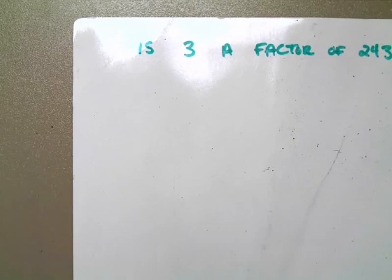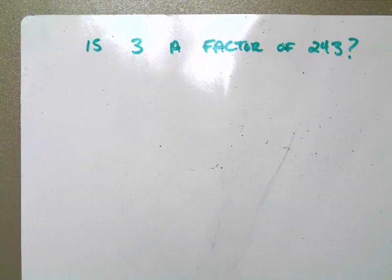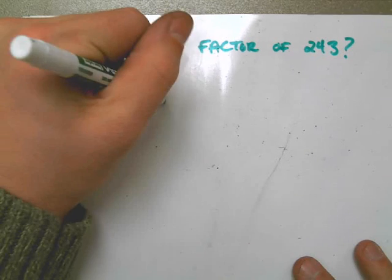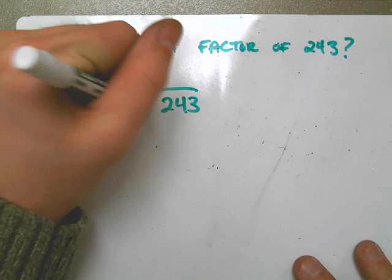What if I asked you if 3 was a factor of 243? Really what I'm asking is, does the number 3 go into 243 evenly? So to do that, to figure that out, you would take 243 and you would divide it by 3.